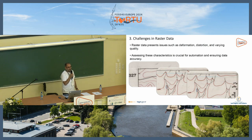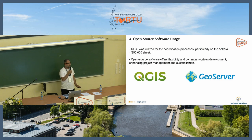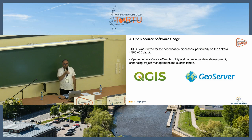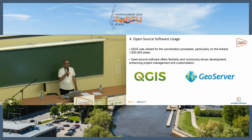Assessing these characteristics is crucial for automation and ensuring data accuracy. We were using QGIS to work with these raster data and coordination processes, particularly on the Ankara sheet. Open source software offers flexibility and community-driven support to enhance project management and customization.